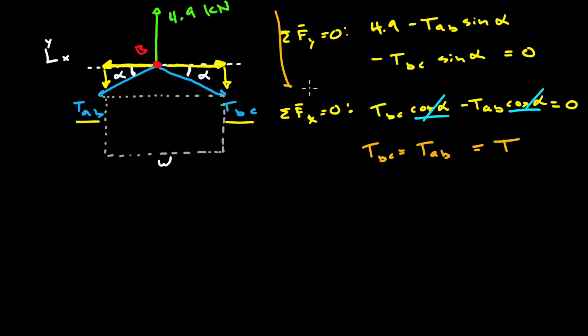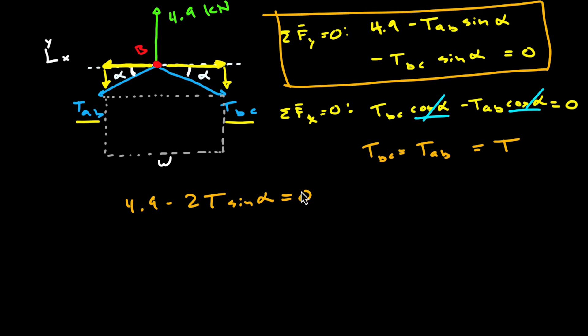So now we can revisit our sum of forces in the y direction equation and we can just plug in T for TAB and TBC. Something a little bit simpler. Now this is still one equation that has two unknowns but we were given some additional information at the beginning of the problem. We were told at one specific point which is at the point of breakage of cable ABC that the maximum tension in that cable could be no more than 3.2 kilonewtons. So essentially what we're trying to do is figure out the alpha or the angle here at that breakage point and then we can relate that angle to the width that the box must be.